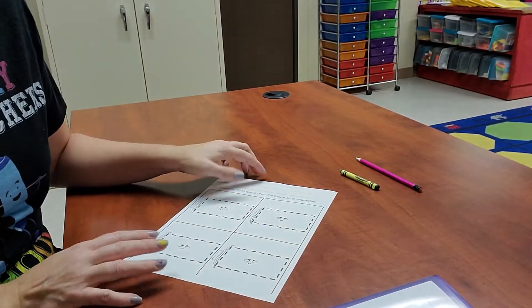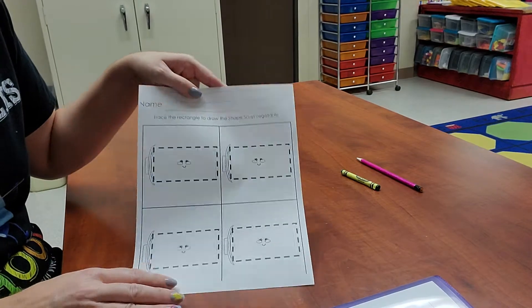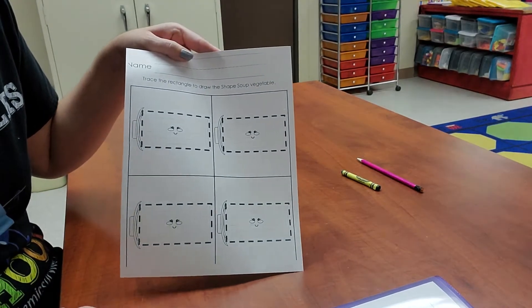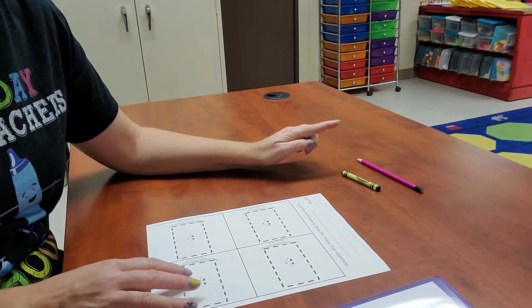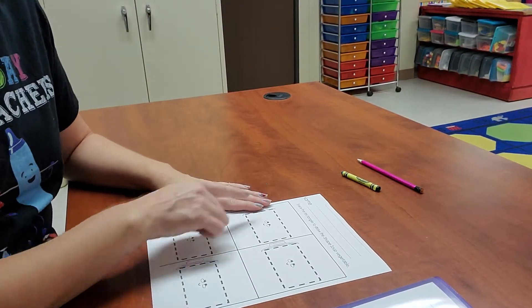Hello everybody! All right, let's work on our rectangle worksheet. Go ahead and pull this out of your communication folder. You need your pencil to write your name and your green crayon to trace our rectangles.